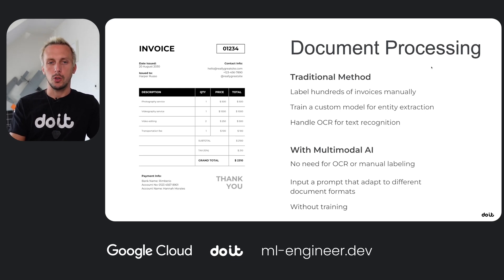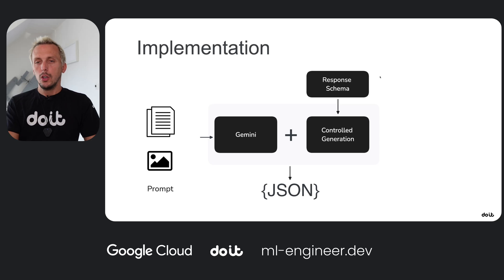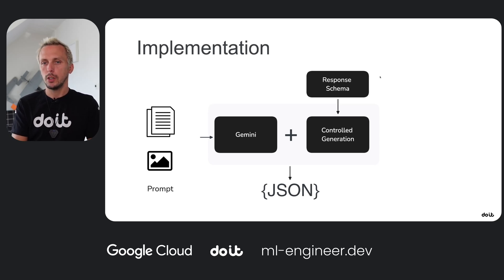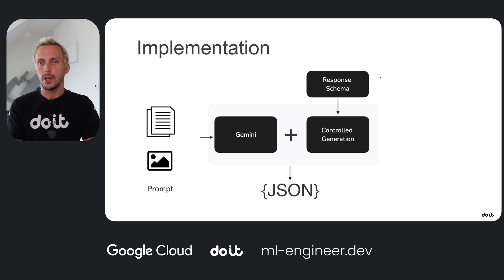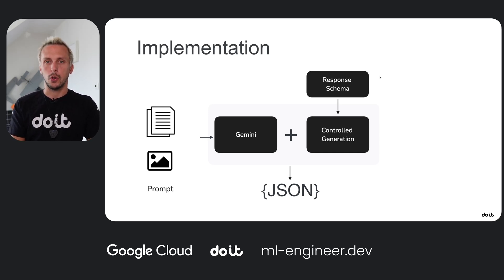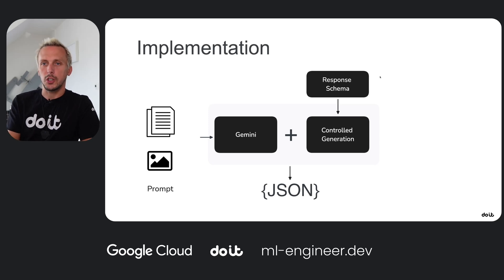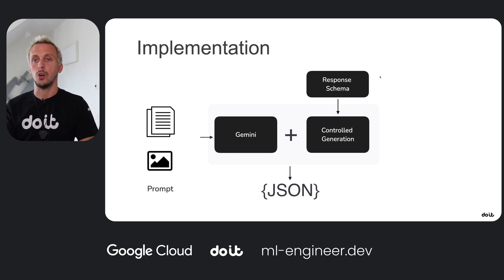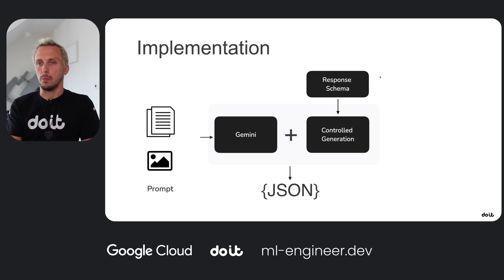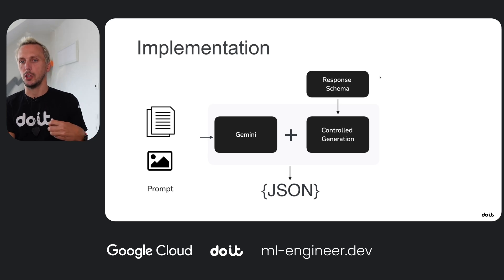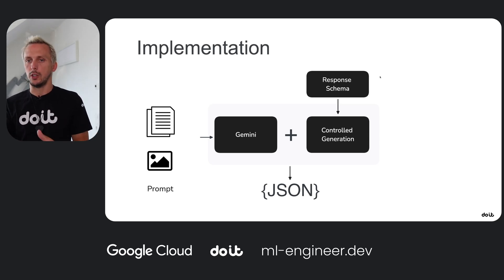Let me show you the overall architecture so you better understand what we're implementing. We have our Gemini model in the center. On the left side we have a document — could be a PDF or a scanned image. We combine it together with a prompt and send it to the Gemini model. There's a feature called controlled generation, which we use to extract information by defining a response schema, and we get the data back as JSON for use in subsequent processes.